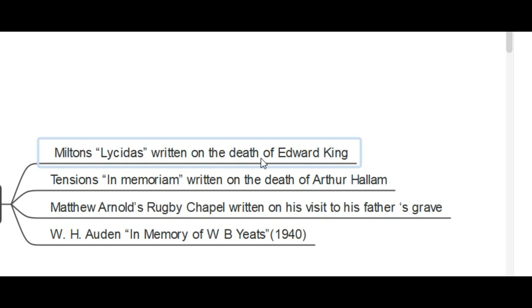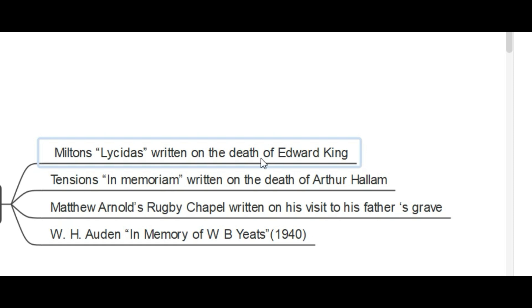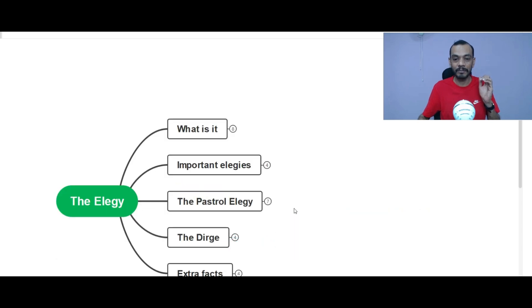And third one is Matthew Arnold's elegy, the Rugby Chapel, written on his visit to his father's grave 15 years after he died. And W.H. Auden's, it is in the 20th century, in memory of W.B. Yeats, published in 1940. These are some of the most commonly asked elegies from English literature.